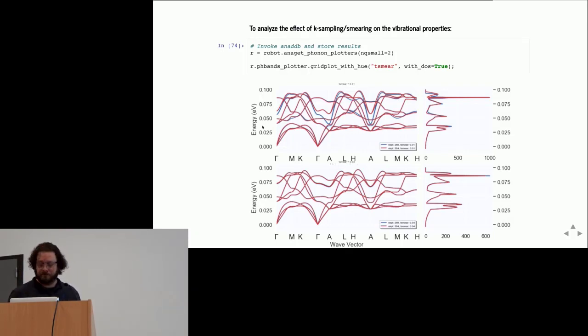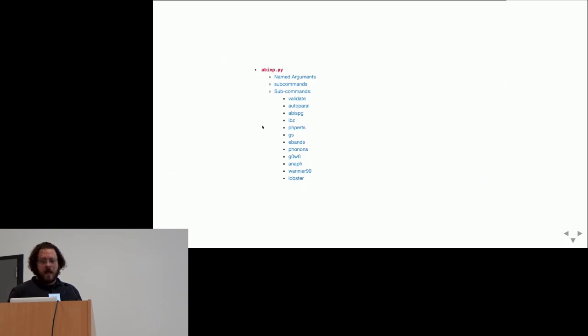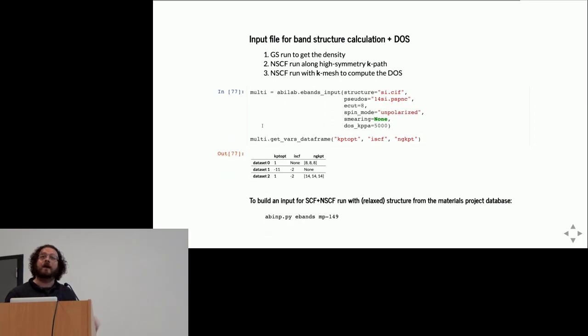Abinp is a script that we use to generate input files automatically. It's not the high-throughput infrastructure, it's just a tool that I use a lot when I'm debugging or want to run calculations quickly and need a template. This is the Python API. This is how we build input files in AbiPy, starting from CIF files up to the potentials and some sort of meta-variable that defines the k-point sampling and the spin polarization.